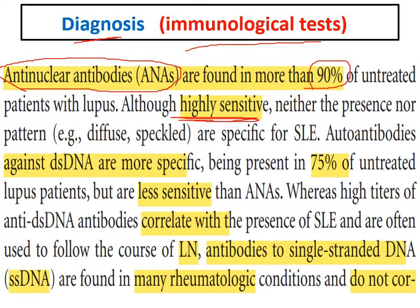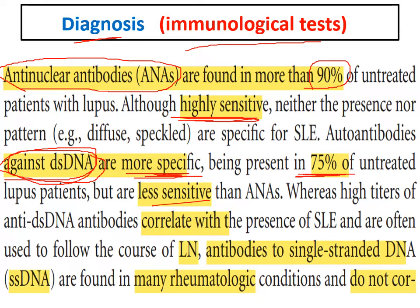Anti-double-stranded DNA antibodies are more specific for lupus but less sensitive — present in only about 75 percent of cases. A positive ANA does not confirm lupus, but a positive anti-dsDNA confirms the diagnosis more specifically. Anti-dsDNA levels usually correlate with lupus activity and lupus nephritis activity — they are typically elevated during active disease, which is important in clinical practice.